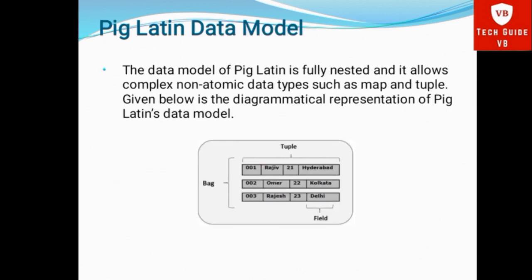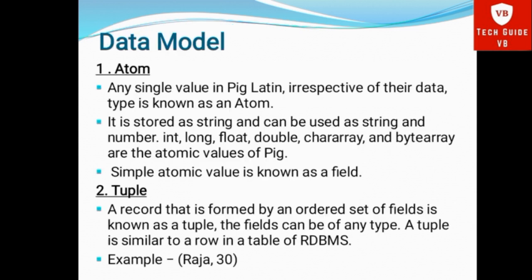Next, Pig Latin Data Model. The data model of Pig Latin is fully nested and it allows complex non-atomic data models such as Map and Tuple. Map is a collection of key-value pairs. Tuple is an ordered set of fields. Given below is a diagrammatical representation of the Pig Latin data model. First, Atom. Any single value in Pig Latin, irrespective of its data type, is known as Atom. It is stored as a string and can be used as a string or number.